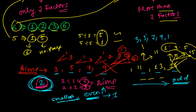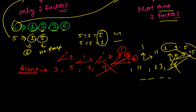Among all prime numbers, 2 is the only even one; all the rest are odd. Prime numbers are unlimited — there are infinitely many of them. Later I will teach you the best way to remember and memorize all the prime numbers. For now, just try to understand what prime numbers are.